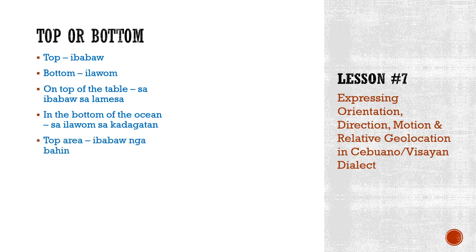Top area and bottom area — just like the previous examples. We are using bahin again. Once you see the word bahin, it means a portion, a side, or a section. Top area: ibabaw nga bahin. Bottom area: ilaaw nga bahin.